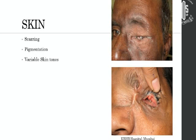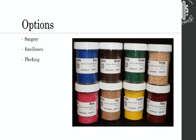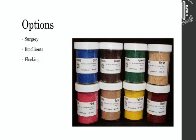Sometimes there are skin problems, like this post-irradiation case where achieving the correct skin tone for an exenteration prosthesis can be a challenge. I found a very interesting material called 'flocking,' which is available from the same sources where silicone is ordered. In the lab, I mixed some yellow and red into the silicone, and the result is this yellowish-red tinge with fine dots all over, replicating the skin's appearance.